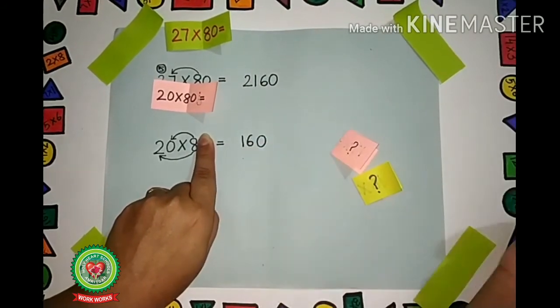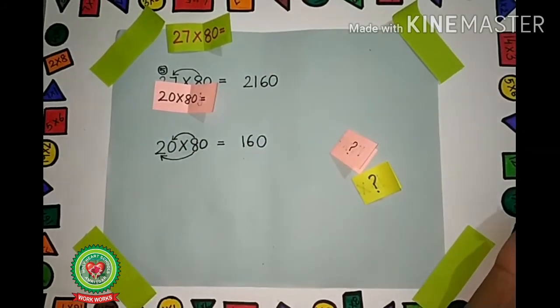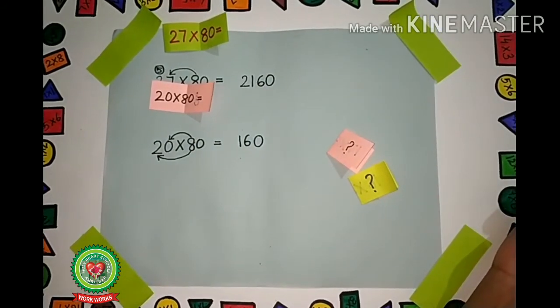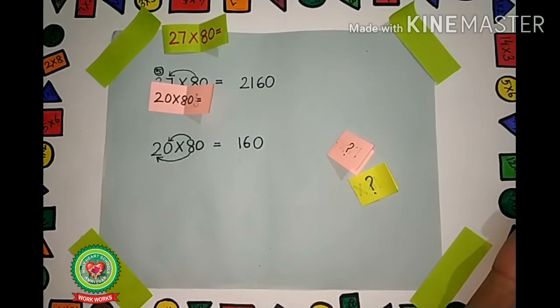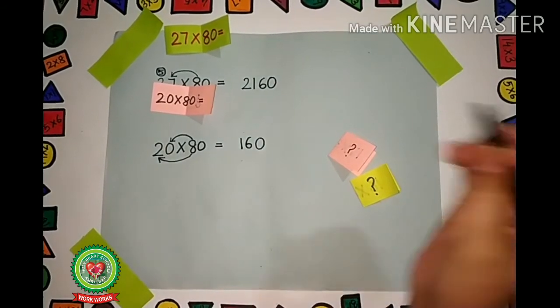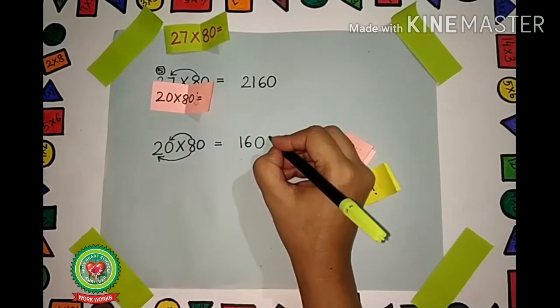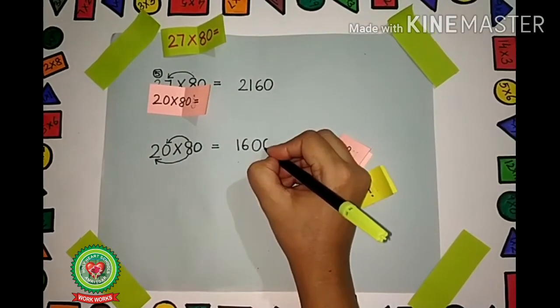Now remove your finger. What can you see? There is a 0. So we will put the 0. Our answer is 1600.